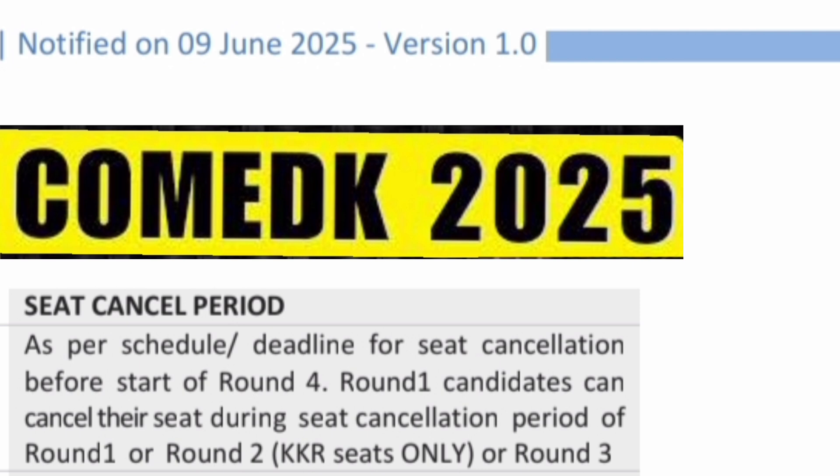The first important thing is to understand the seat cancellation period. As per the schedule, the deadline for seat cancellation is before Round 4 starts. Round 1 candidates can cancel their seat after Round 1, Round 2, or Round 3. Round 2 candidates can cancel their seat after Round 3 as well. Round 3 candidates can also cancel their seat before the start of Round 4.